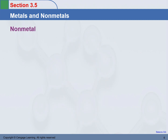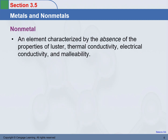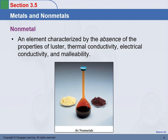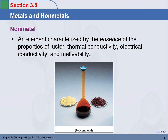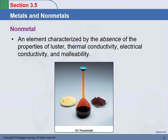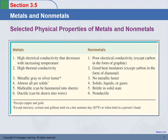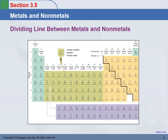Non-metals: a non-metal is an element characterized by the absence of those properties that belong to metals. Here is a comparison between the properties of metals and non-metals.